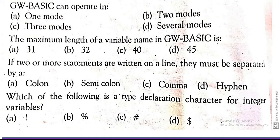Our next MCQ is: GW-BASIC can operate in: Option A One mode, Option B Two modes, Option C Three modes, and Option D Several modes. The correct answer is Option B Two modes.